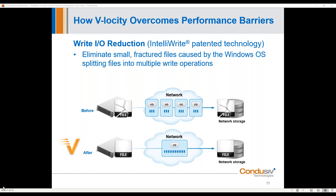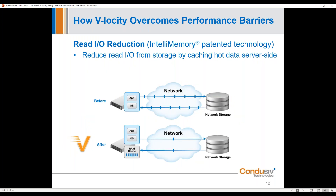This is what we replaced defragmentation with. You don't have to let files break and then fix them — they just don't break. It's like the egg on the wall: just don't let the egg fall and break. We're getting that nice streamlined I/O efficiency, removing 30 to 40 percent of the unnecessary I/O, and letting things flow through a sequential, easy-to-process I/O profile. There's a second engine that works as a totally separate activity — called IntelliMemory.